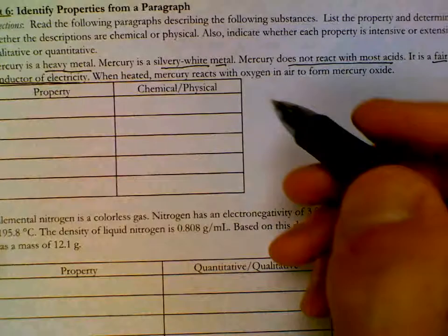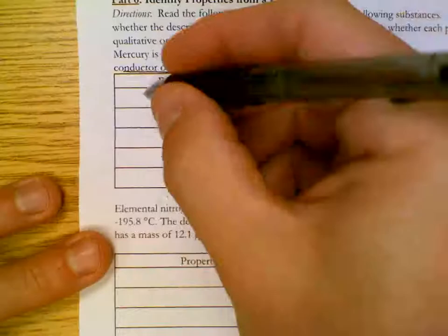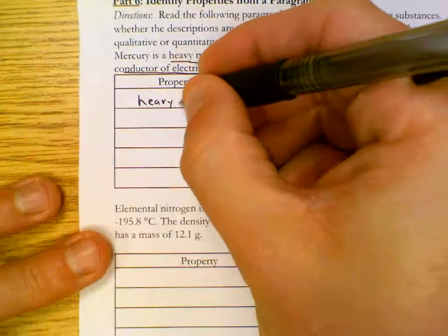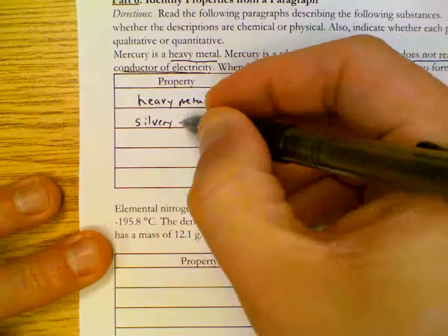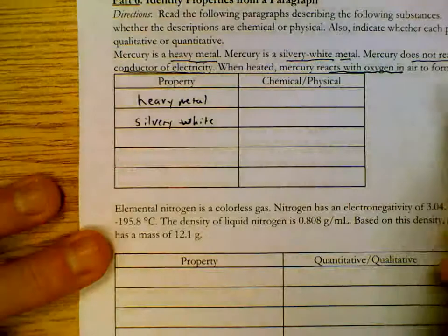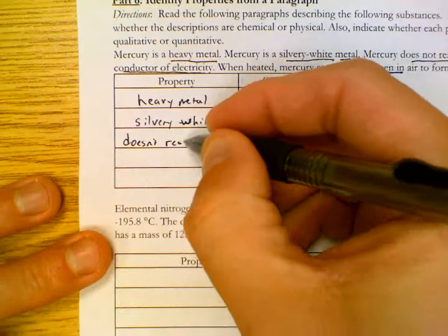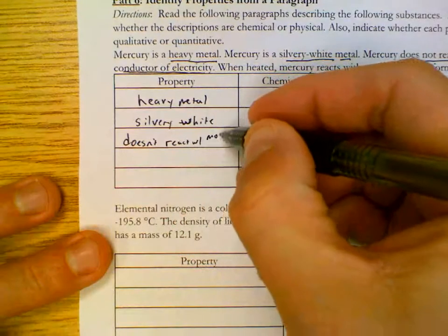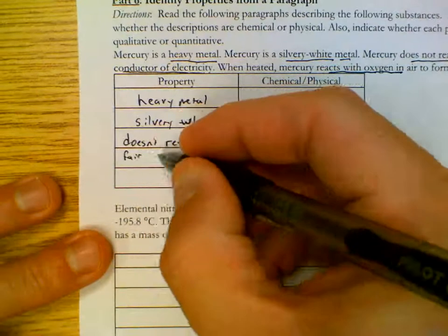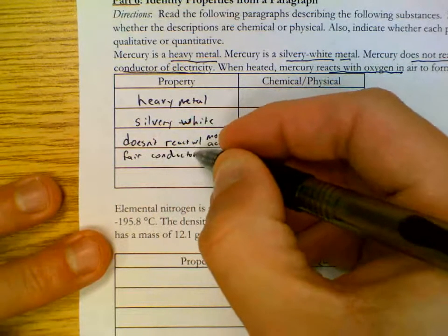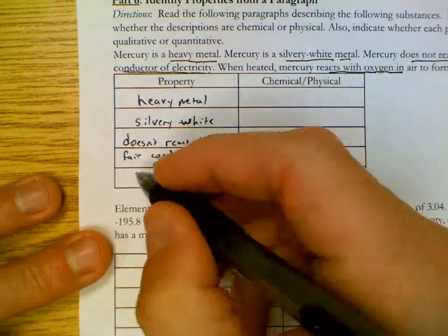Poor conductor of electricity. Heated mercury reacts with oxygen to form mercury oxide. So we could say it's a heavy metal. We could say it's silvery white. We could say it doesn't react with most acids. We could say it's a poor conductor of electricity. Reacts with oxygen.